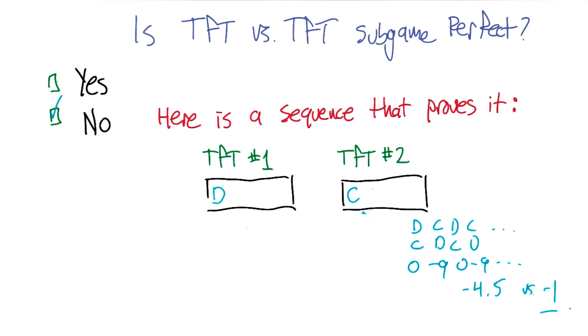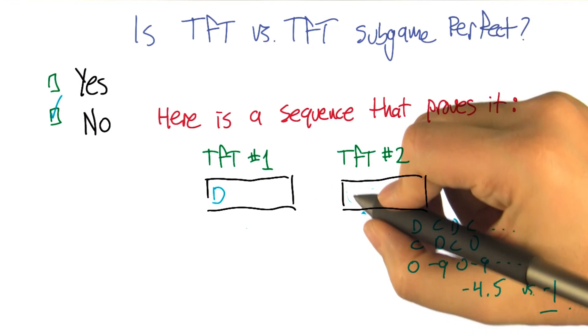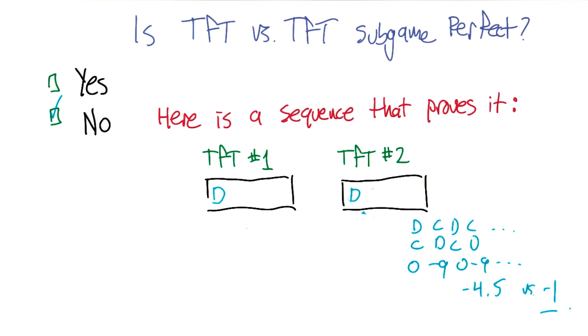All right. So that leaves open the question of, is there a way to be subgame perfect in Prisoner's Dilemma? Can I ask you a question? Sure. Before you answer that? So I had sort of convinced myself that it didn't matter whether tit for tat number 2 started out with C or started out with D. I'm trying to decide whether that's actually true. Okay. That's a good question.